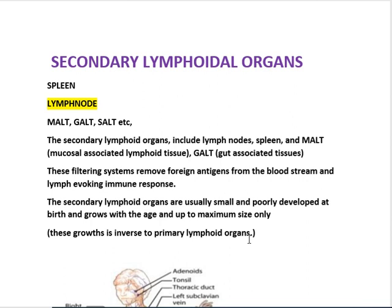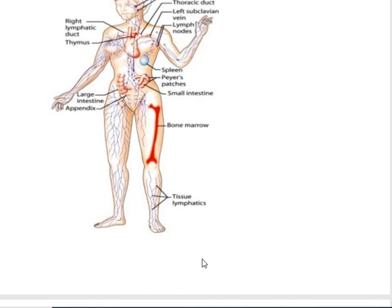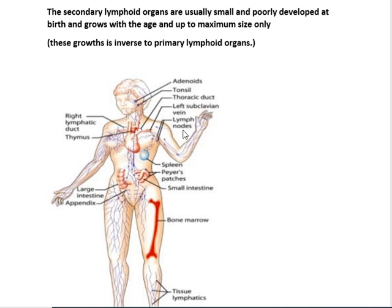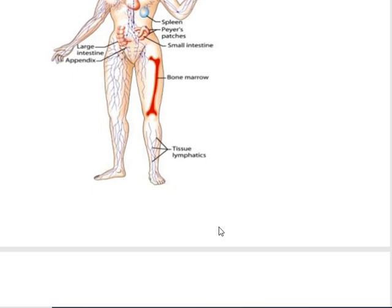For example, when we compare to the primary lymphoid organs, the thymus is well-developed at birth, but secondary lymphoid organs develop and grow only after birth — the inverse of primary lymphoid organ growth. Secondary lymphoid organs include lymphatics, adenoids, tonsils, lymph nodes, and the spleen. We are mainly studying about the spleen and lymph nodes.